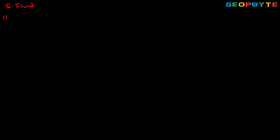Find the first one: 2.5 into 0.3. We need to perform the multiplication of two decimal numbers. The first step is to remove the decimal point. If we remove the decimal point, we get 25 into 3. So 25 into 3 is 75.